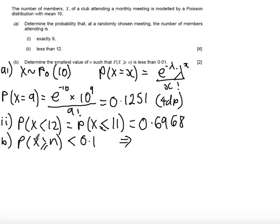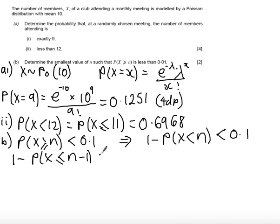So probability X greater than or equal to N is less than 0.1. To find P(X ≥ N), I'd have to do 1 - P(X < N), and we want this to be less than 0.1. We can't do just P(X < N), so we're going to say 1 - P(X ≤ N-1) < 0.1.